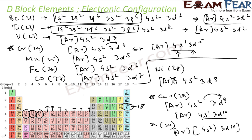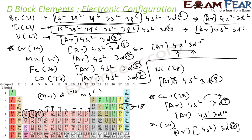Looking at the pattern across d-block elements, the generalized electronic configuration is (n−1)d¹⁻¹⁰ ns¹⁻². The d orbital holds 1 to 10 electrons and the outermost s orbital holds 1 to 2 electrons. Note that there is a very small energy difference between the (n−1)d and ns orbitals.